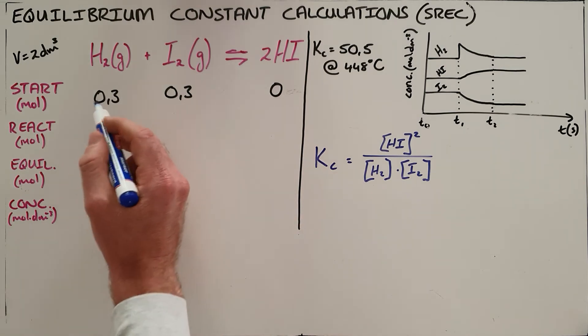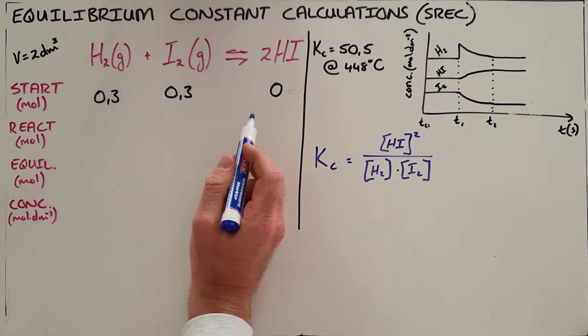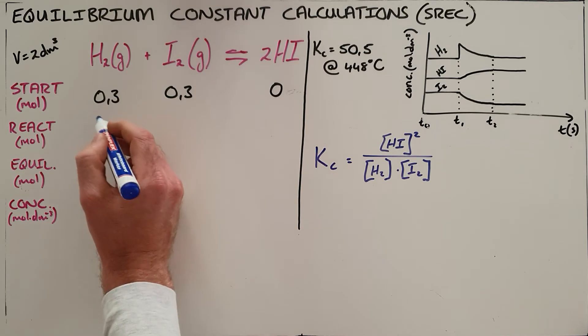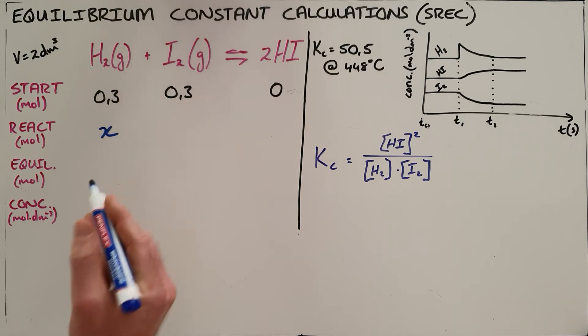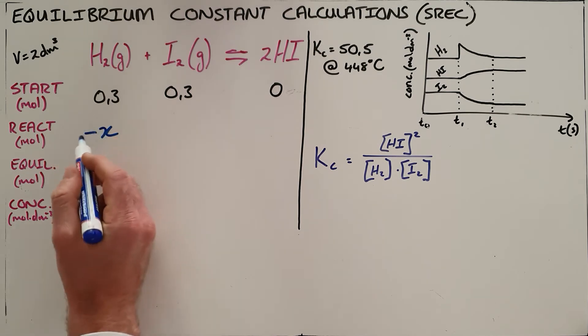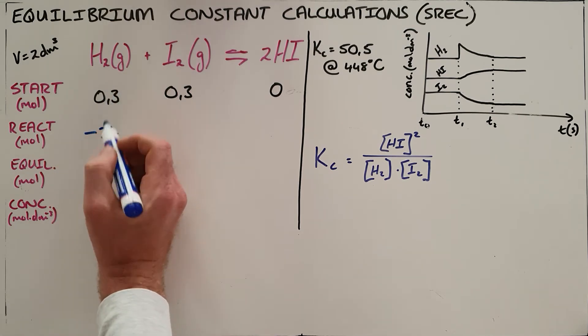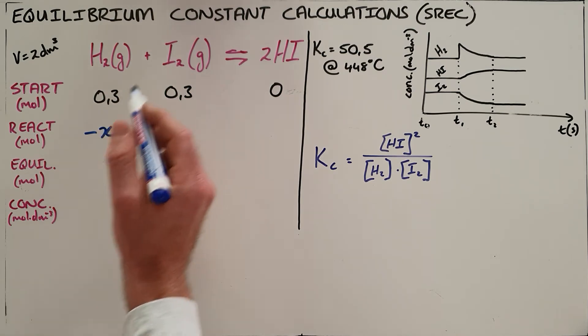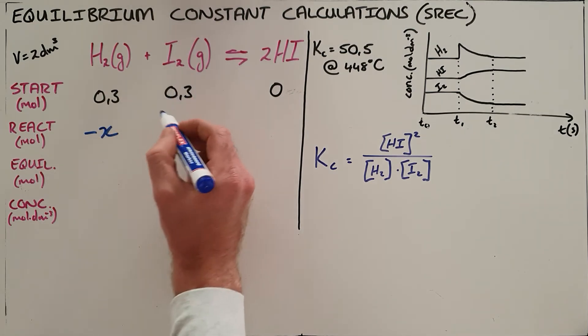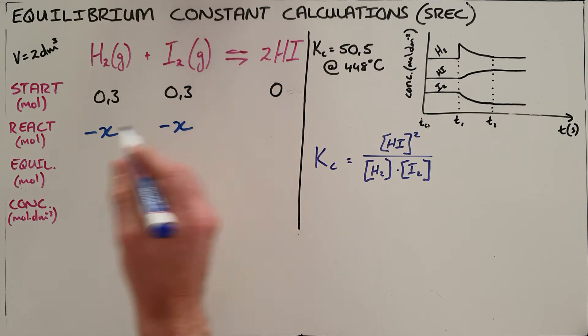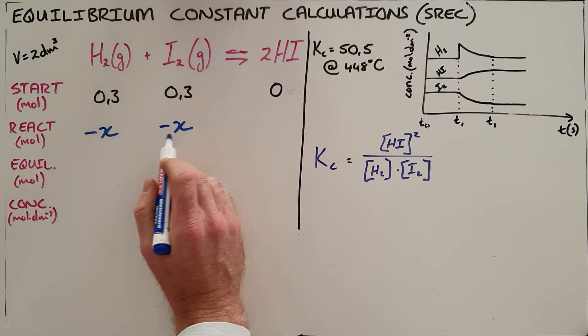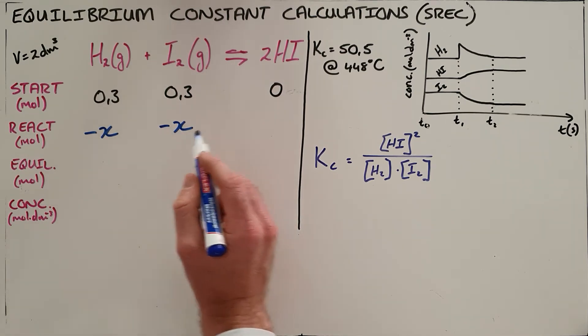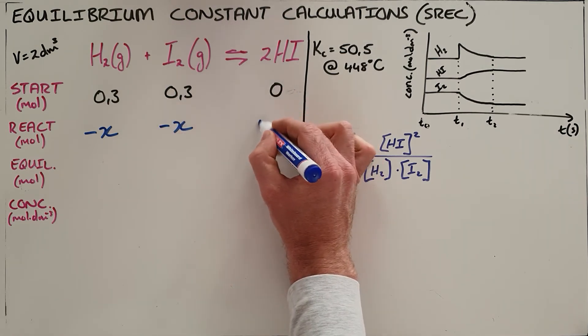In order for equilibrium to be established, a certain amount of hydrogen must react. We call that amount X, and since it's removed from the hydrogen, we say negative X reacts. The same goes for iodine. Since they react in a 1:1 ratio, negative X moles of each reactant is removed. Since the ratio is 2:1, we form 2X moles of hydrogen iodide.